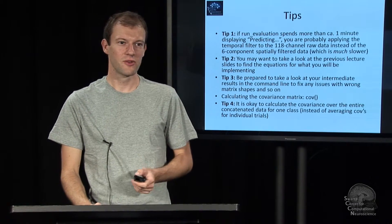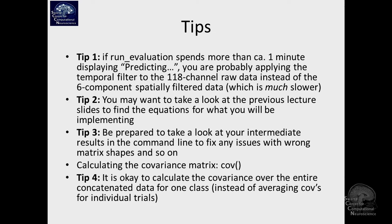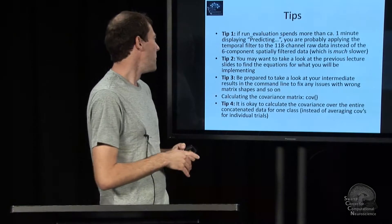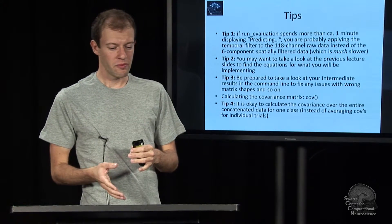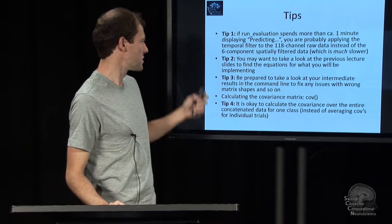There are a few tips, as always. First and foremost, if the function runs very slowly, the reason is probably that you somehow apply temporal filtering to the full channel data instead of to the already spatially filtered data. So if you apply to 118 channels, it's much slower than if you apply to six channels. But it makes no difference where you apply it mathematically, because time and space are sort of orthogonal in the way in which it's computed.